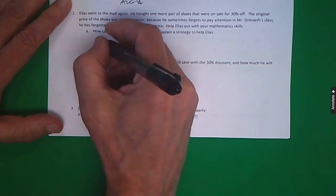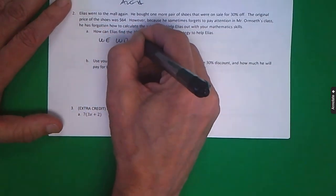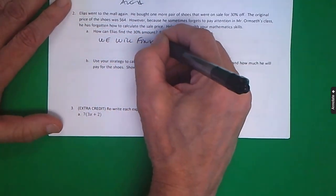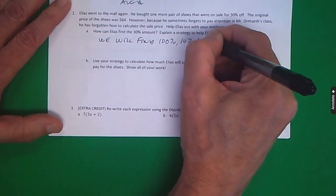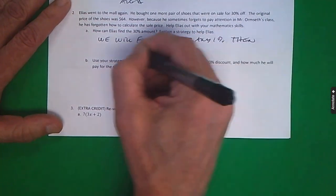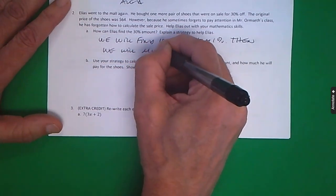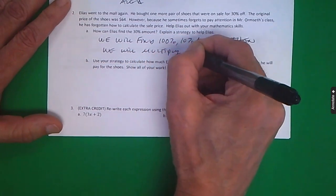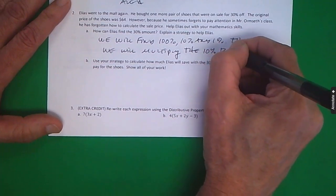To figure out his 30% amount, we will find 100%, 10%, and 1%. Then we will multiply the 10% by three.